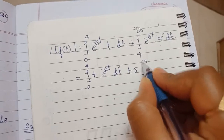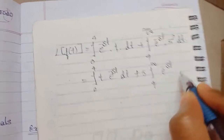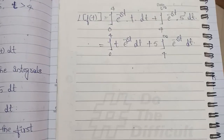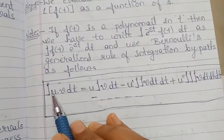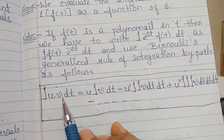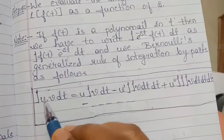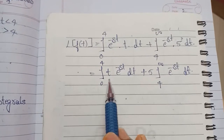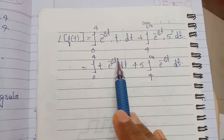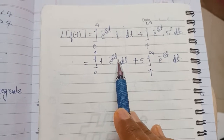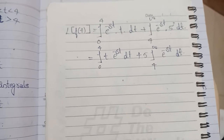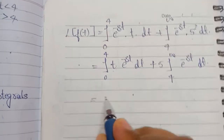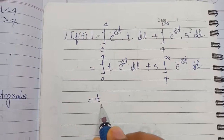Now apply Bernoulli's rule. We know that integral of u · v dt follows the Bernoulli rule where u is the differentiating part and v is the integrating part. Here we take t as the differentiating part and e^(−st) as the integrating part.